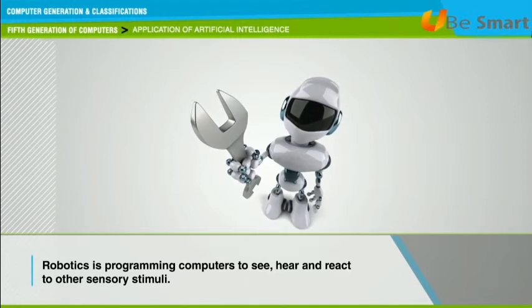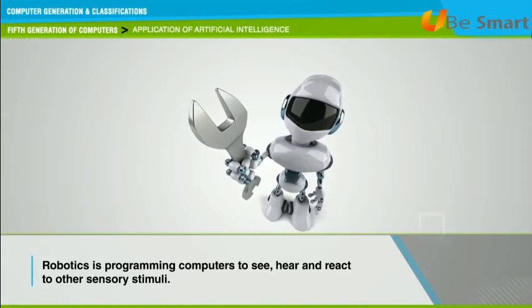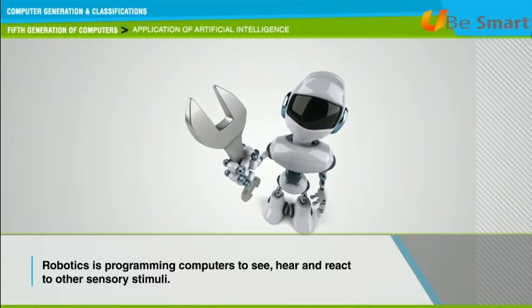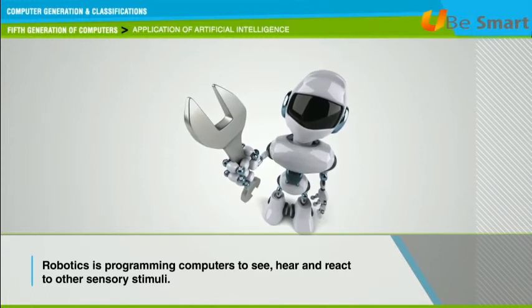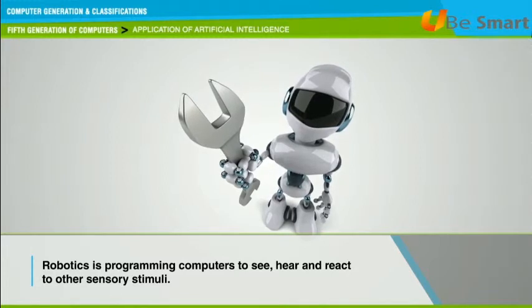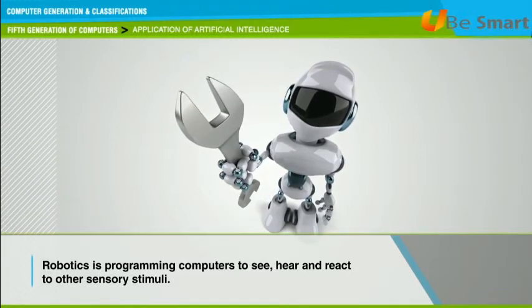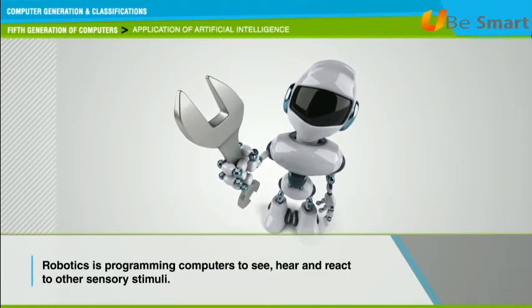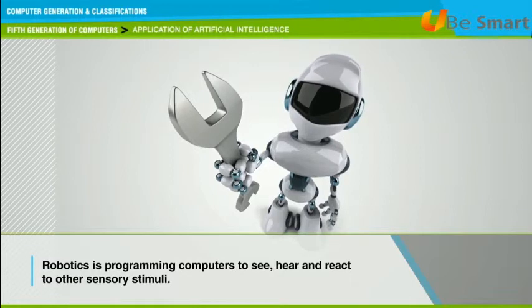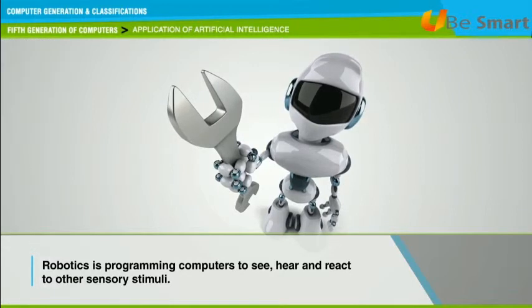Currently, computers do not exhibit full artificial intelligence. In the area of robotics, computers are now widely used in assembly plants but they are capable only of very limited tasks. Robots have great difficulty identifying objects based on appearance or feel, and they still move and handle objects clumsily.